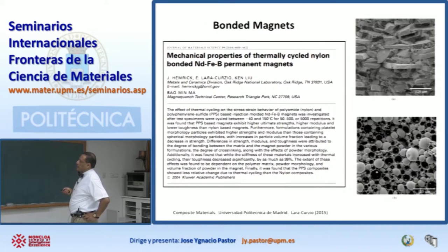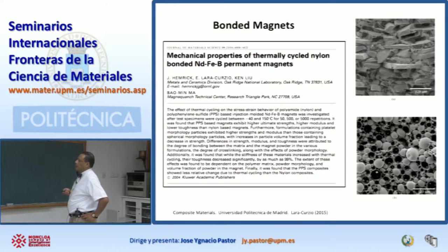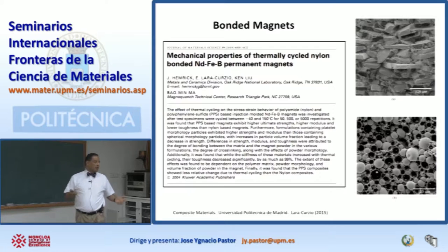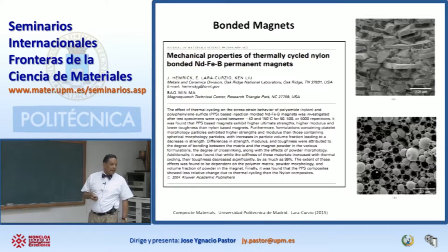So this is an example of a polymer matrix composite. In this case, we have platelets, and you can see the shape of the reinforcement, or you can have these beautiful spheres. So these are two examples of particle reinforced composites or polymer matrix composites.